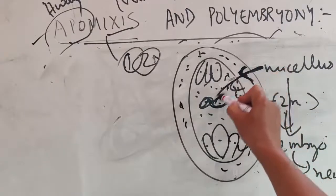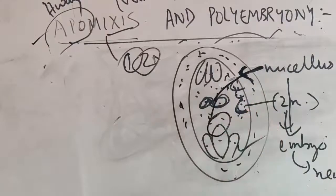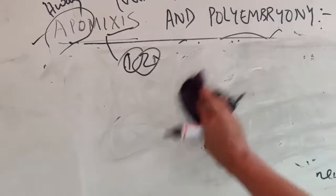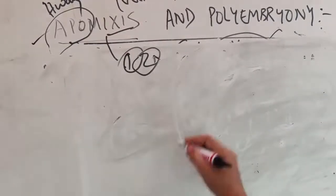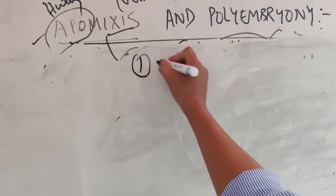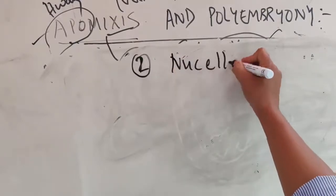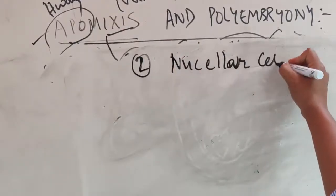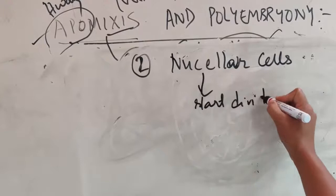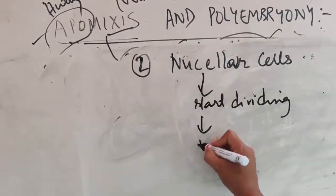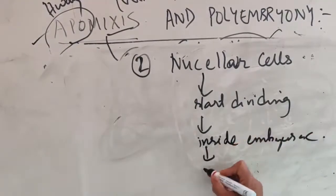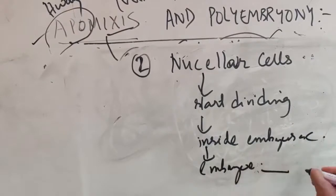The nucellus cells start dividing, come inside the embryo sac, and can form an embryo. So these are the two possible ways to form seeds without fertilization: number one, a naturally diploid egg cell; number two, nucellus cells that start dividing and enter the embryo sac to form an embryo.